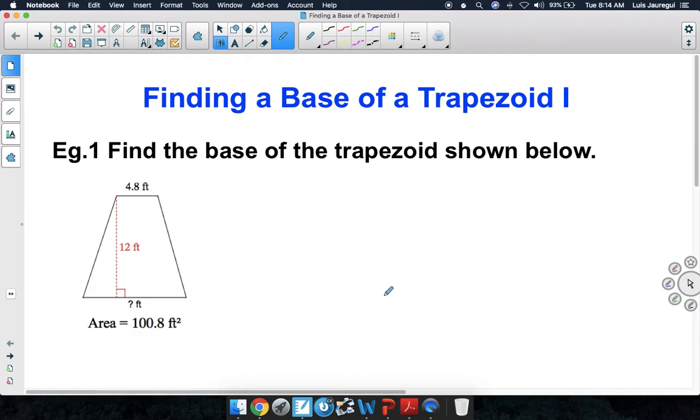Let's take a look at what we're given. Notice that the little base is equal to 4.8 feet. The height is equal to 12 feet. The big base, we don't know, so we're going to just call it x feet for now. And we're provided with the area being 100.8 square feet.